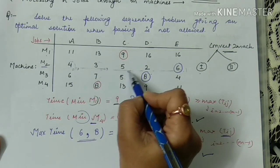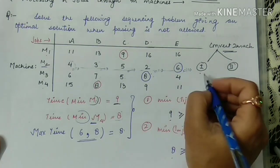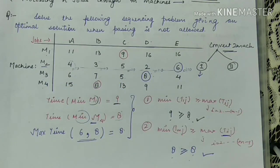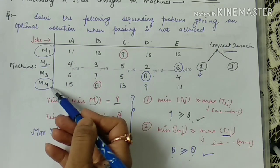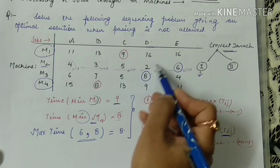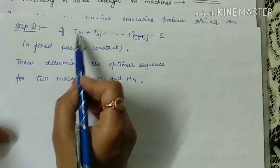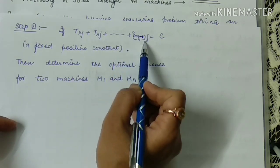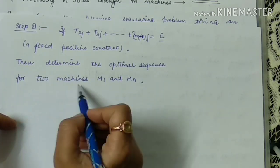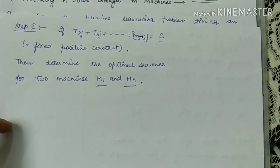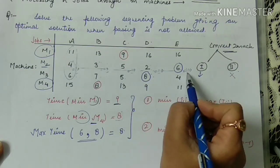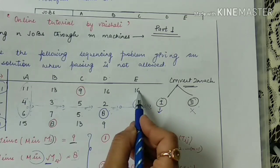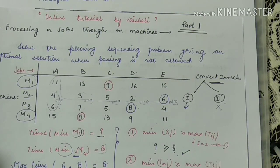Since the sum of intermediary machine times is a constant value, we apply Case 1: take M1 (first machine) and Mm (last machine) as the two machine case, leaving the constant value aside. If T2j + T3j + ... = a fixed constant, then determine the optimal sequence using only the first and last machines. We take M1 and M4 for obtaining the optimal sequence.